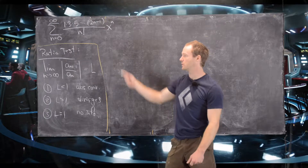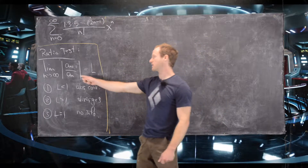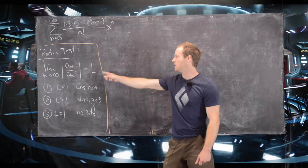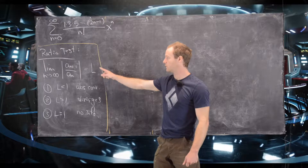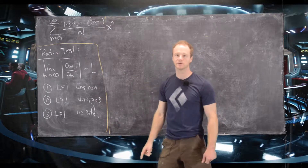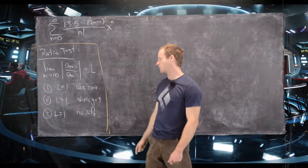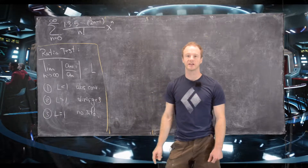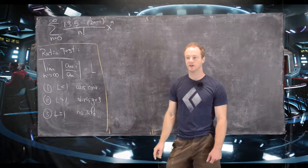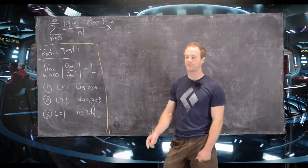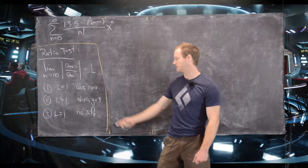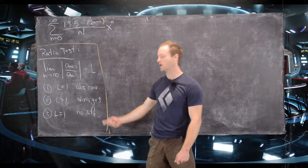Our first tool will be the ratio test. We want to look at the limit of the n plus first term over the nth term in absolute value. If that equals L, then if L is less than 1 it absolutely converges, if L is bigger than 1 it diverges, and if L equals 1 that gives us no information. We'll use the ratio test to find the general shape of the interval of convergence, then use another test to check the endpoints.